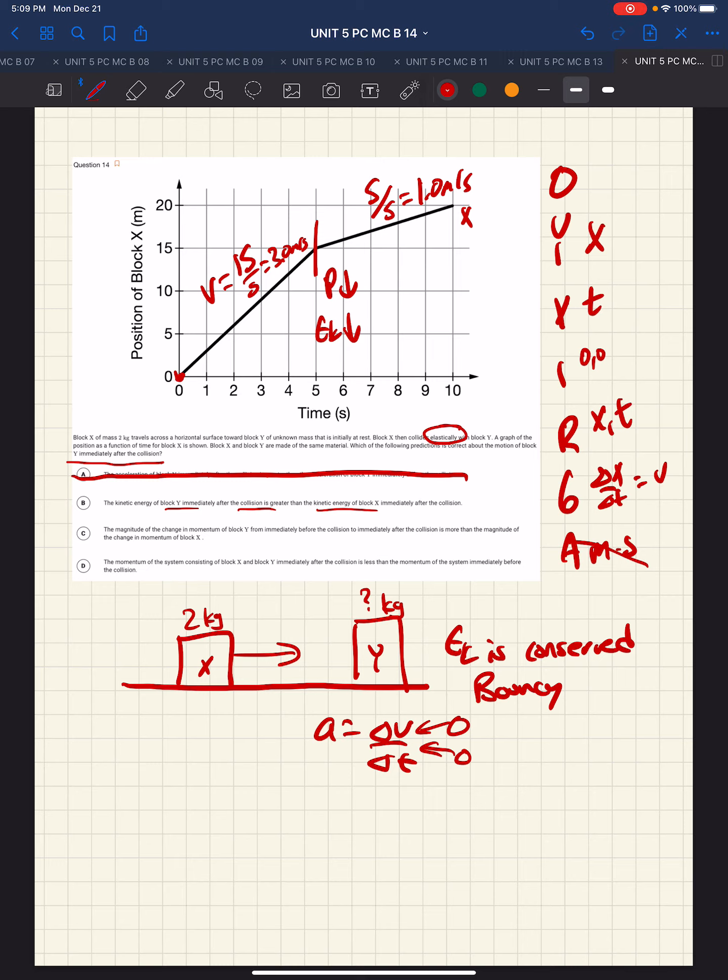The magnitude of the change in momentum of Y from immediately before the collision to immediately after the collision is more than the magnitude of the change in momentum of delta X. No. The law of conservation momentum, which is the total momentum of the system is constant, means that whatever change in momentum of one, there will be an equal and opposite change in momentum of the other. So, that can't possibly be true either. So, that's out.